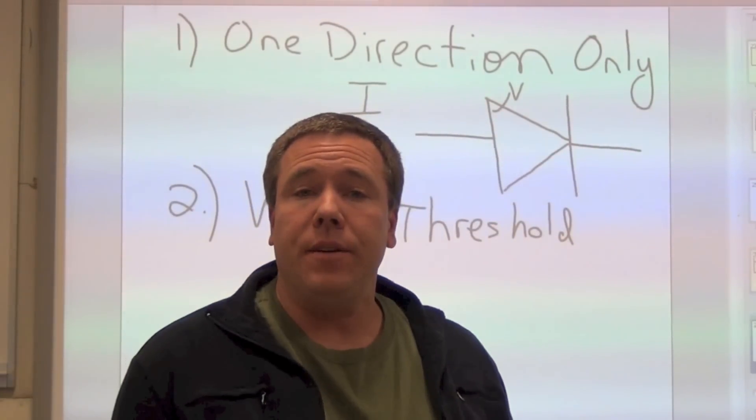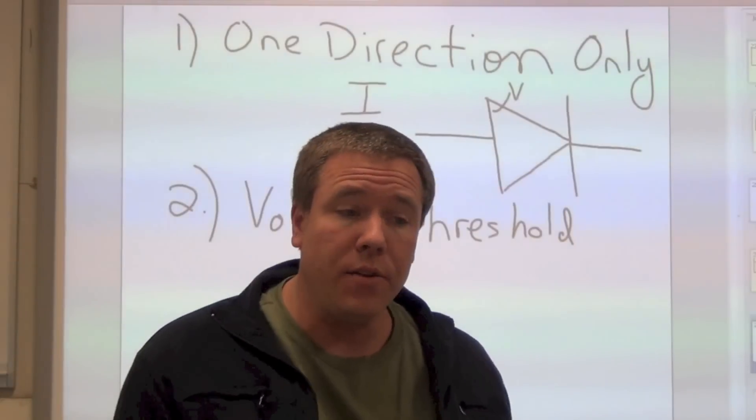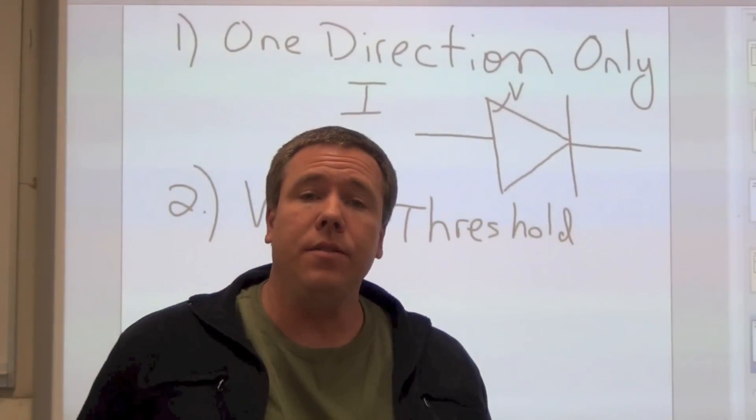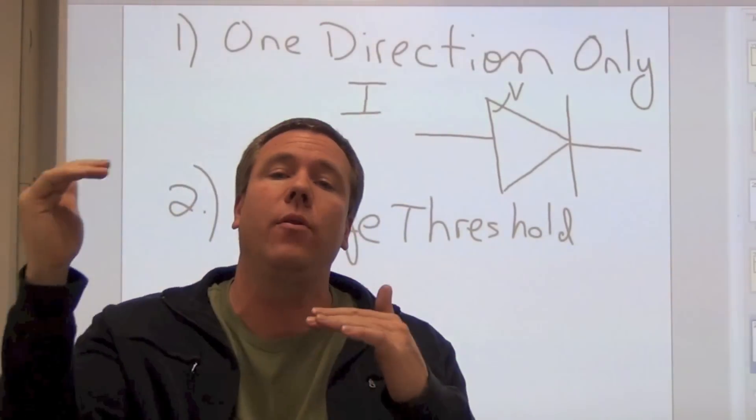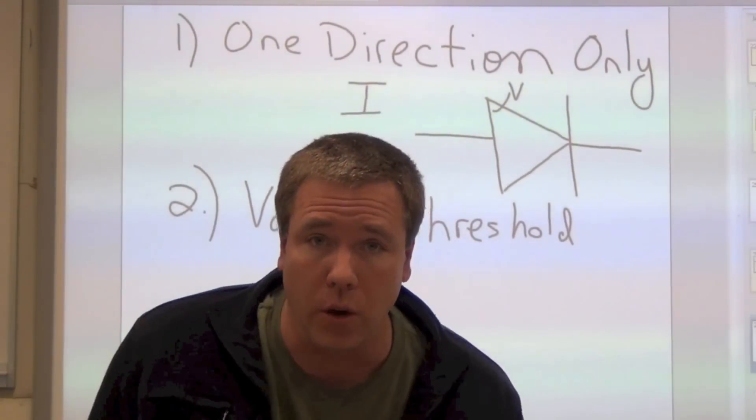So remember that the diode has two properties. One is a direction limiter. It only allows current in one direction, not the other. And also remember that it has a voltage threshold. That in the allowable direction, you have to exceed the voltage threshold in order for the current to flow.